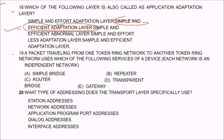Question 19: a packet traveling from one token ring network to another token ring network uses which service of a device? Each network is an independent network. The answer is D — a transparent bridge. A packet traveling between token ring networks uses the services of a transparent bridge.